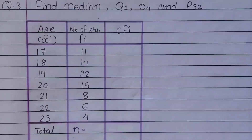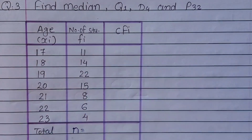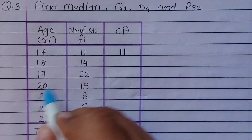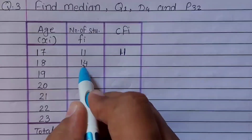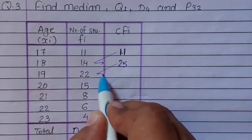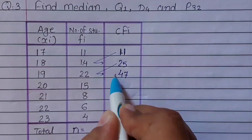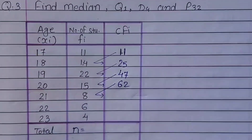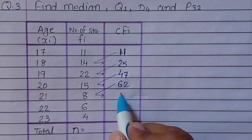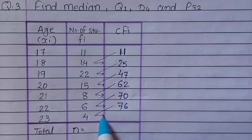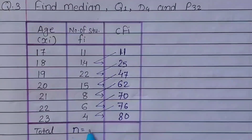First of all we will prepare a table with xi, fi, and cumulative frequency. The first fi is the same; then 11 plus 14 will be 25, then 25 plus 22 will be 47, then 47 plus 15 will be 62, then 62 plus 8 will be 70, 70 plus 8 will be 76, and 76 plus 4 will be 80. So our n is 80.